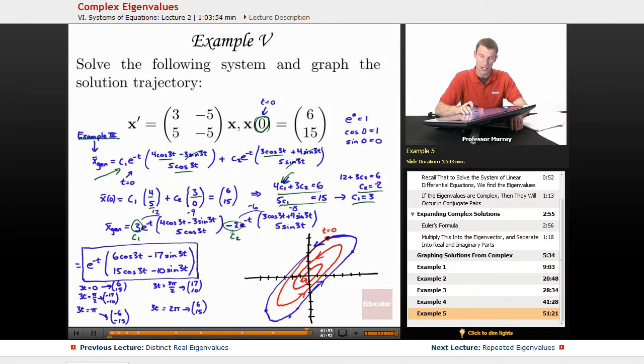And then I gathered like terms. I got all my cosines together and all my sines together, which is where I got this 6 and this 17. That 6, for example, came from 3 times 4, which is 12, minus 2 times 3. So 12 minus 6 gave me that 6.